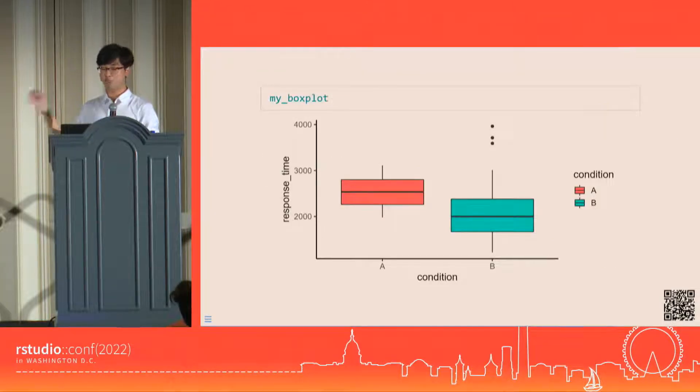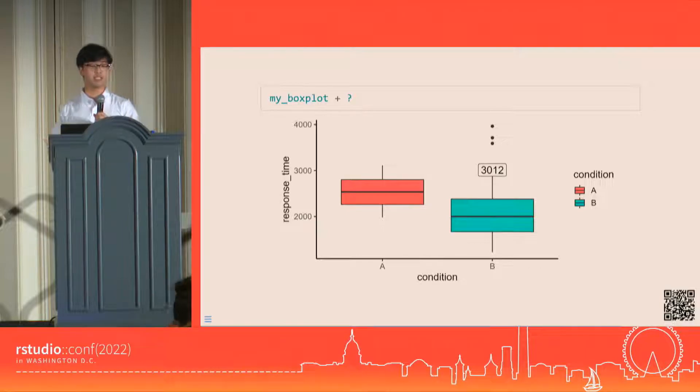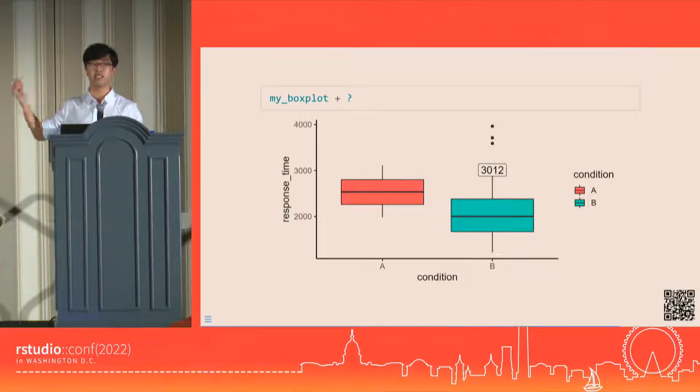We have this boxplot of response times by condition that we made at the beginning, and we'd like to add a layer labeling the value of the upper whisker in the second boxplot. Applying what we just learned, we can write this layer in steps, just like how the layer itself is built up in steps. This is kind of hard code, so we'll get stuck at some point, but then I'll show you how we can use ggtrace to debug our way out of it.